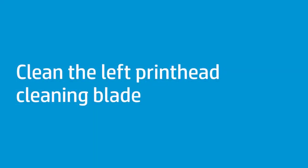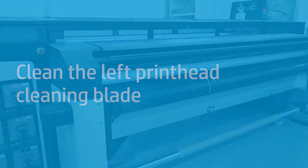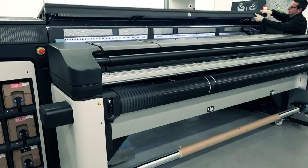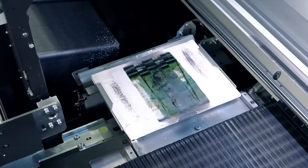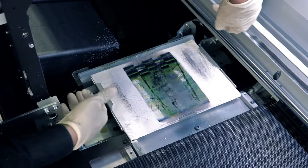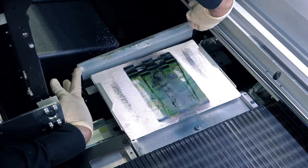Follow these steps to clean the left printhead cleaning blade. Open the top cover and pull out the curing module. On the left side of the printer, remove the left printhead cleaning blade from the printer.